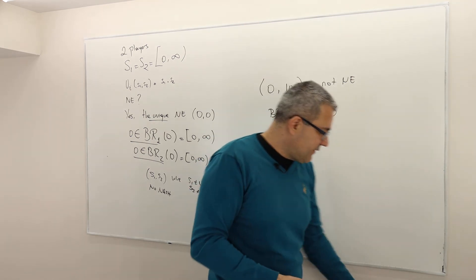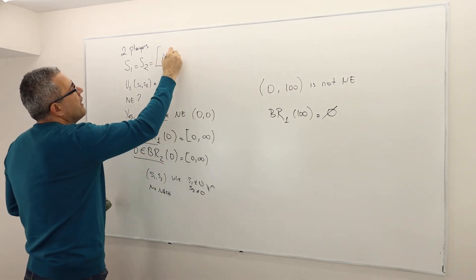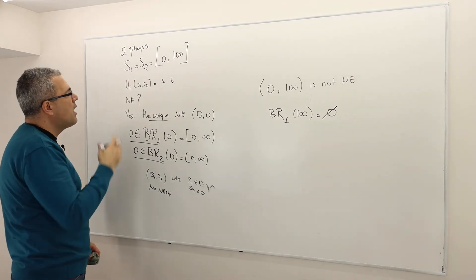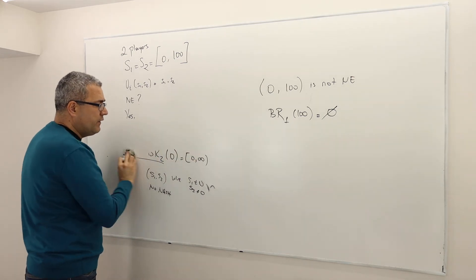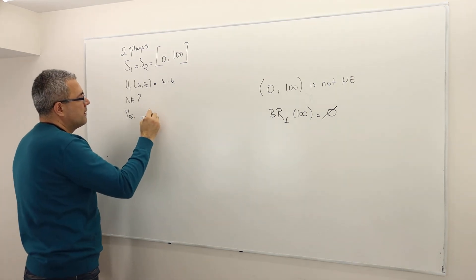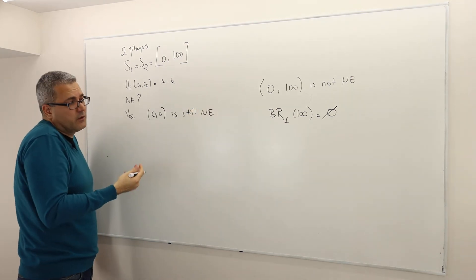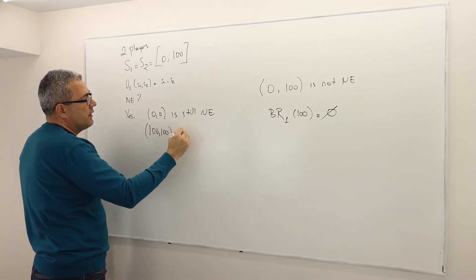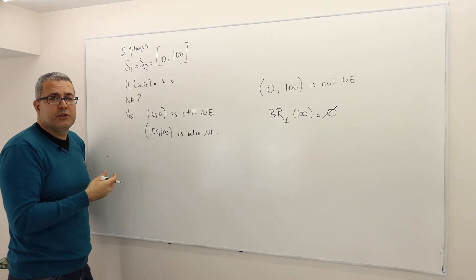But if we modify this game and say you can pick a number between zero and hundred — no more than hundred — what would be the Nash equilibrium? Well, in this case yes, we do have Nash equilibria. One of them is still awkward: zero-zero is still Nash. But there's another, more reasonable Nash equilibrium outcome — hundred-hundred is also Nash.